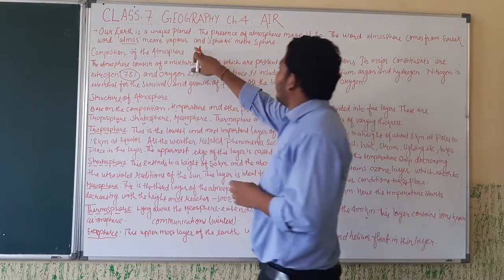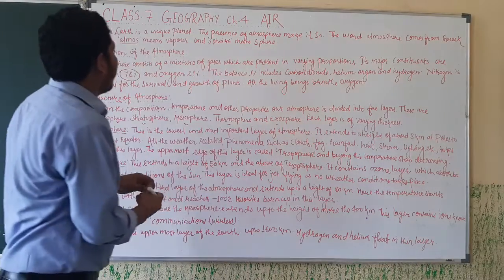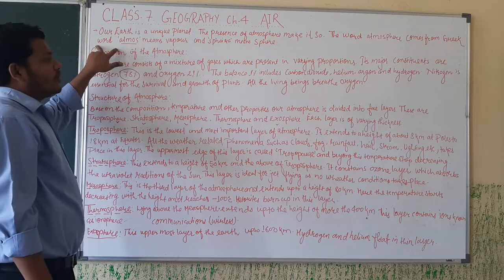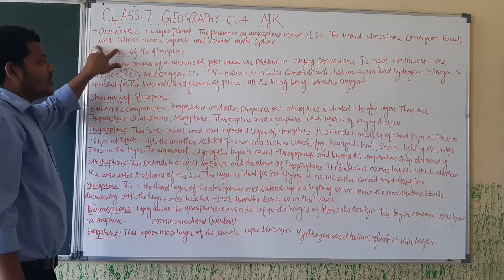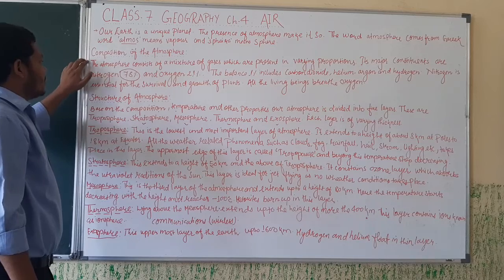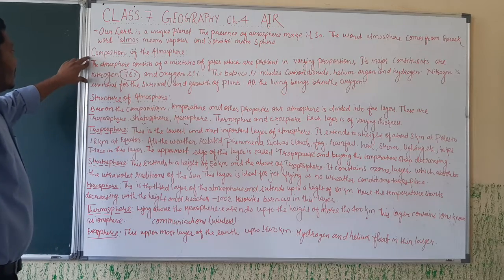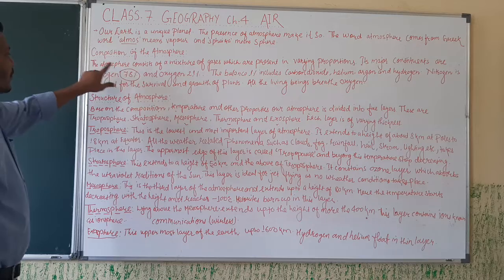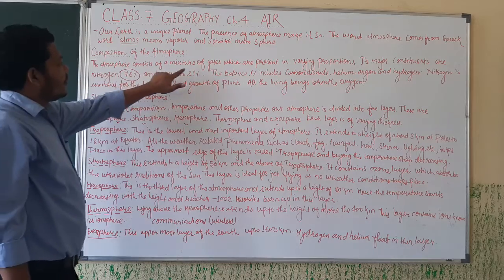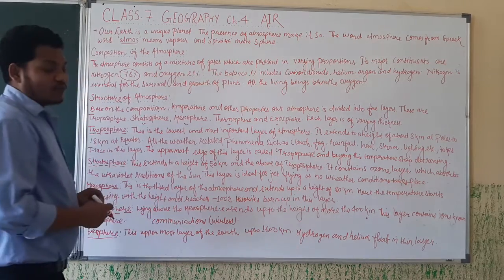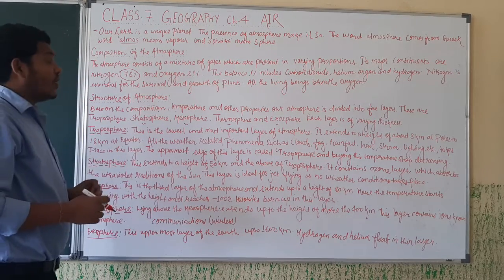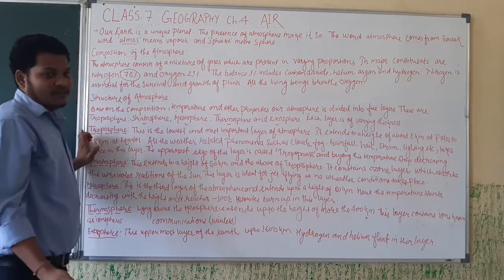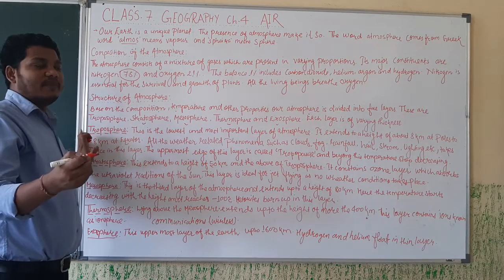Atmos means vapor and sphaera means sphere. Now we will go to the composition of the atmosphere. The atmosphere consists of a mixture of gases in various proportions — not all gases are present in the same amount.